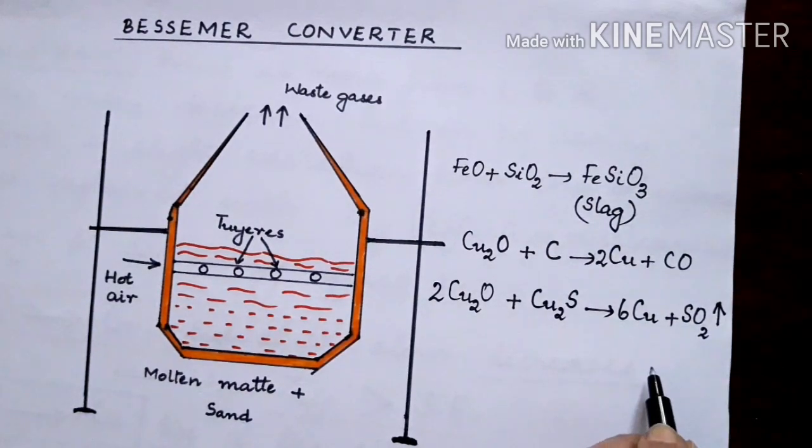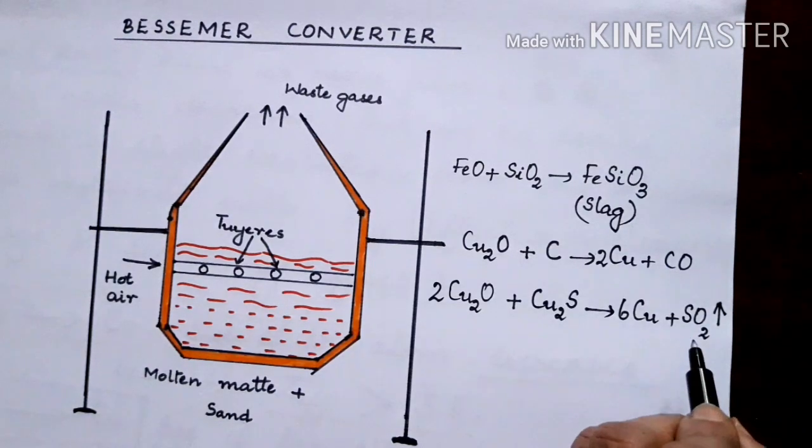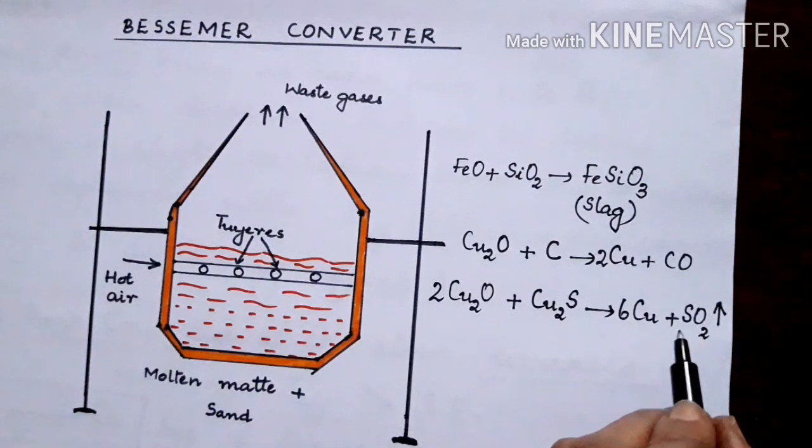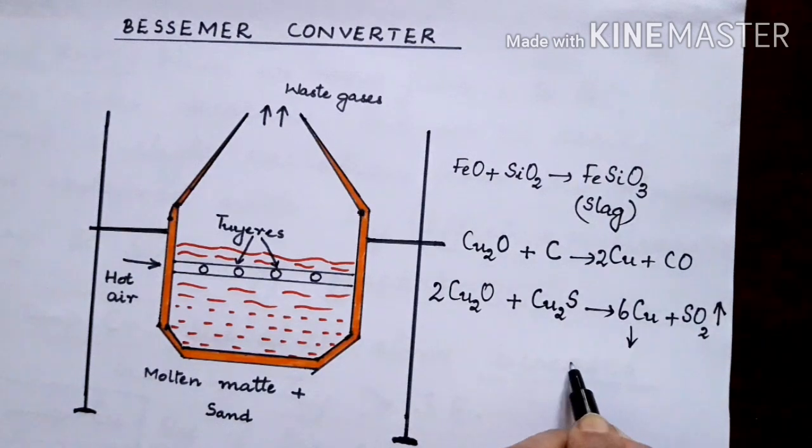This sulfur dioxide is a gas and it starts bubbling out. You know that copper is having a low melting point so it solidifies faster. As it solidifies, the sulfur dioxide gas tries to escape out from it and resulting in a blistered appearance of copper.